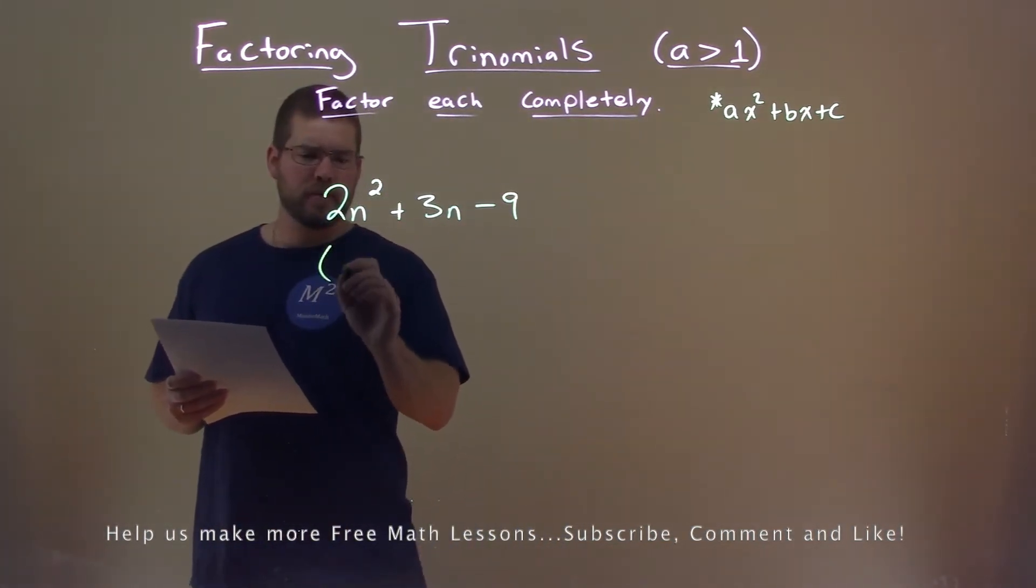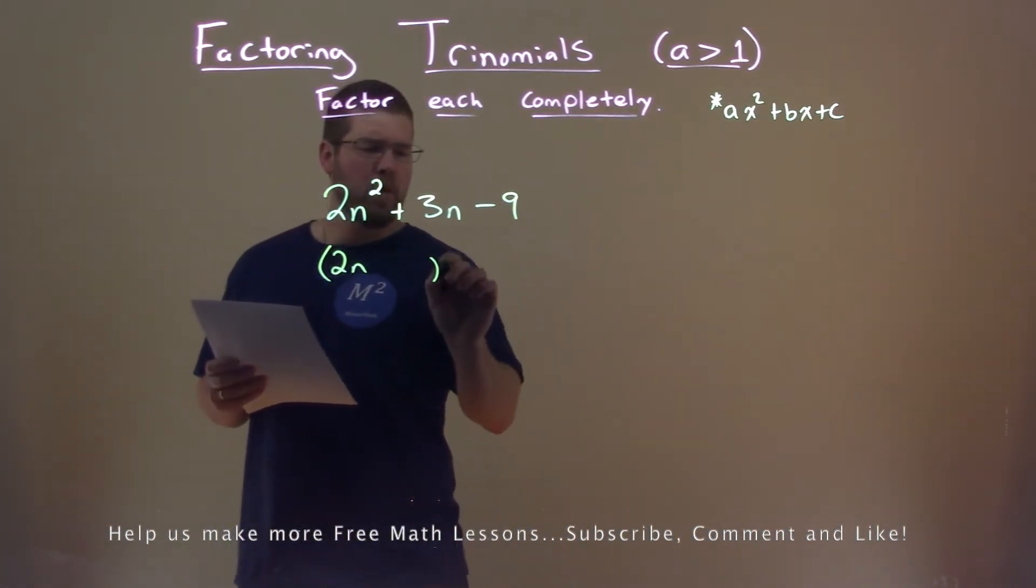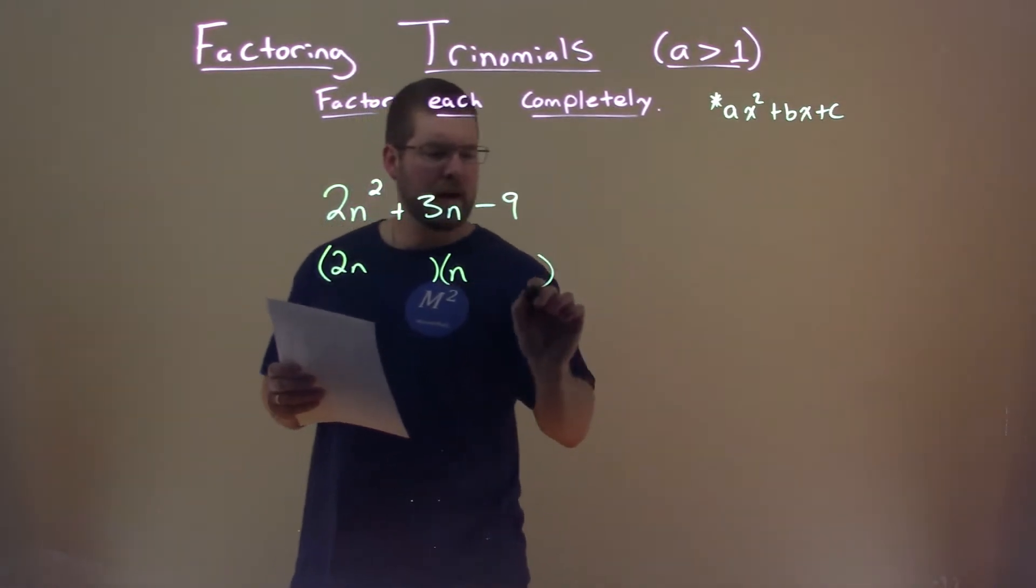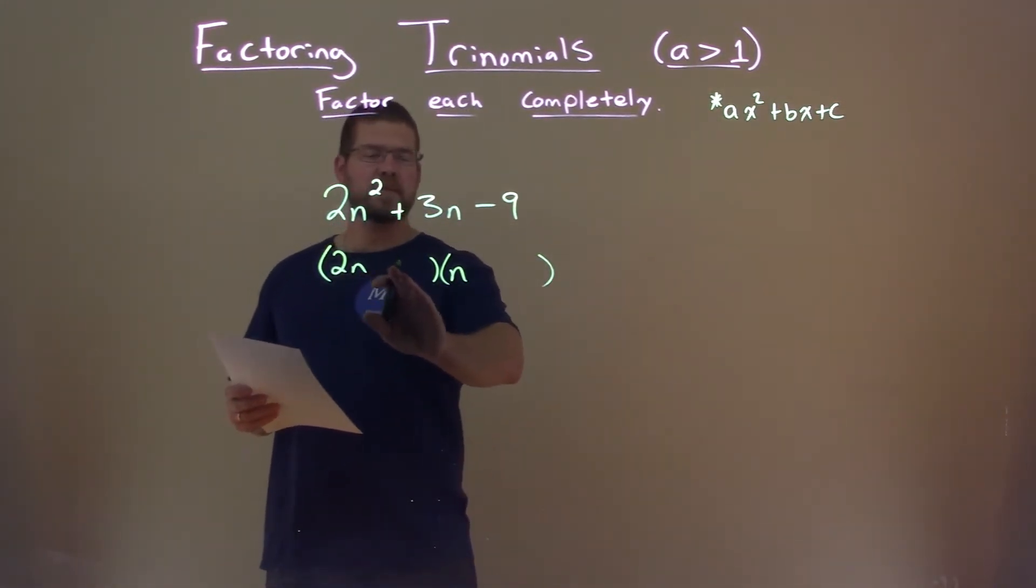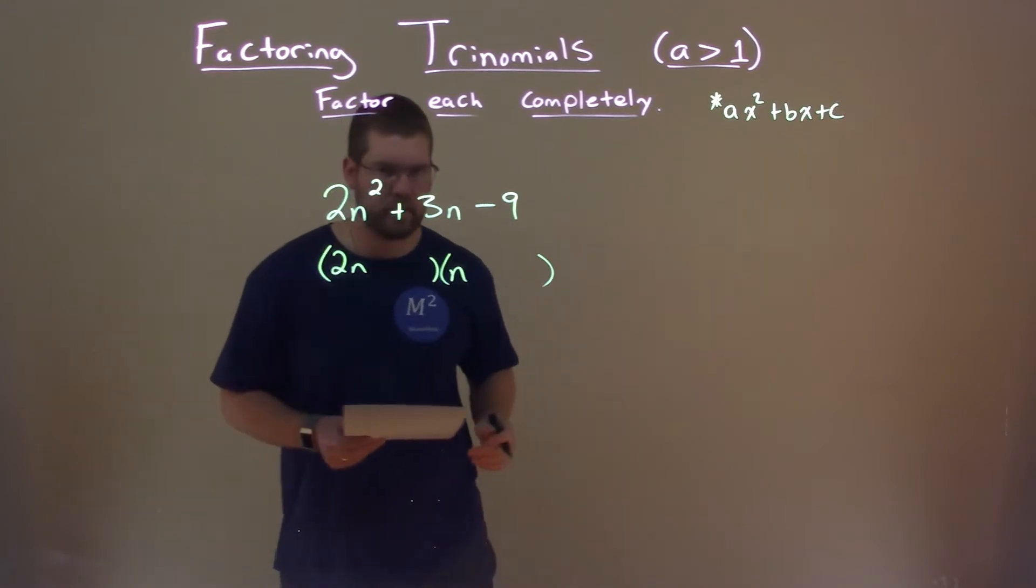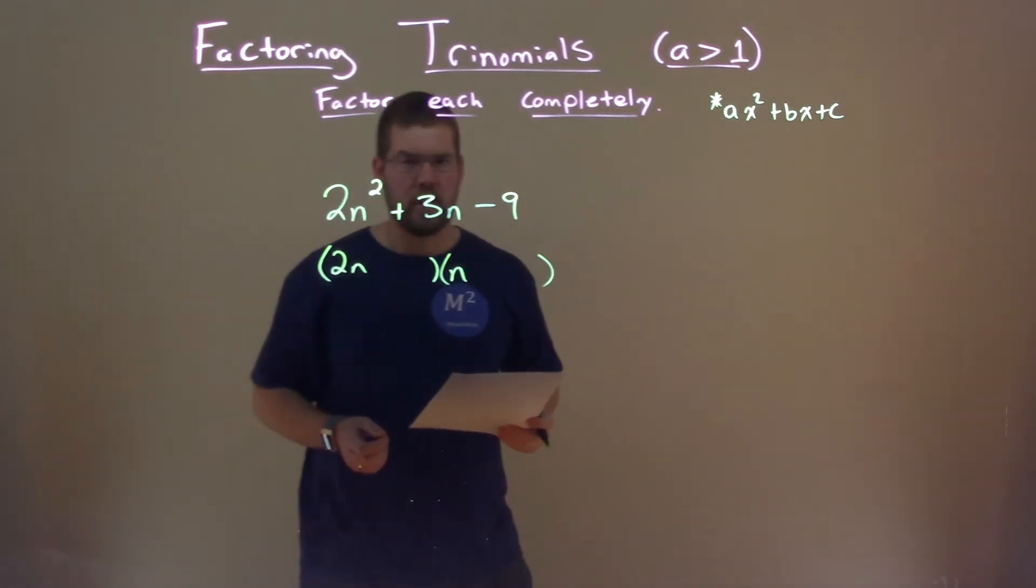Since we have 2 out front, we know this problem when we factor it is going to be in the form of 2n plus or minus something times n plus or minus something else, 2 being a prime number there.